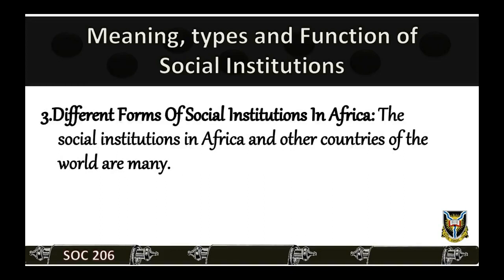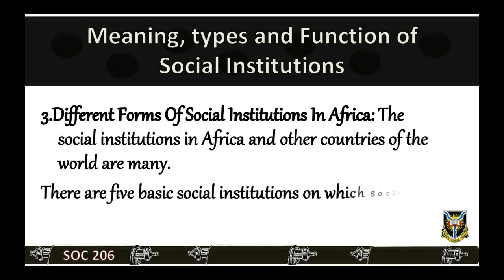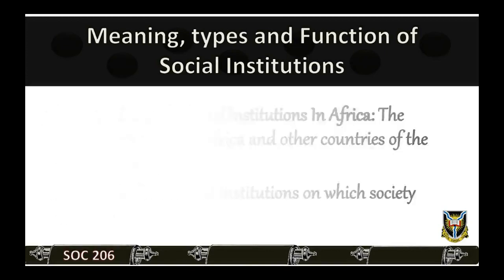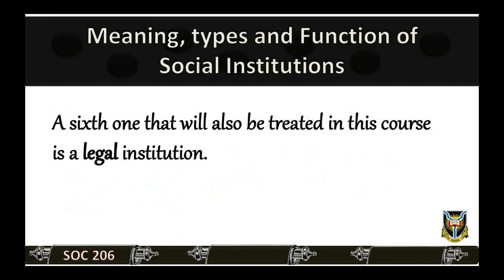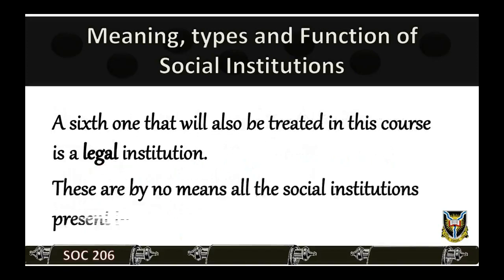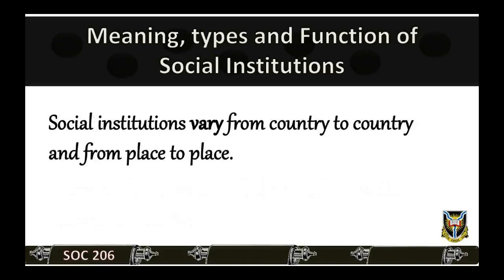The social institutions in Africa and other countries of the world are many. There are five basic social institutions on which society revolves. These are the marriage and family institutions, economic institutions, and religious institutions. Others are the educational institutions and political institutions. A sixth one that will also be treated in this course is the legal institution. Social institutions vary from country to country and from place to place.